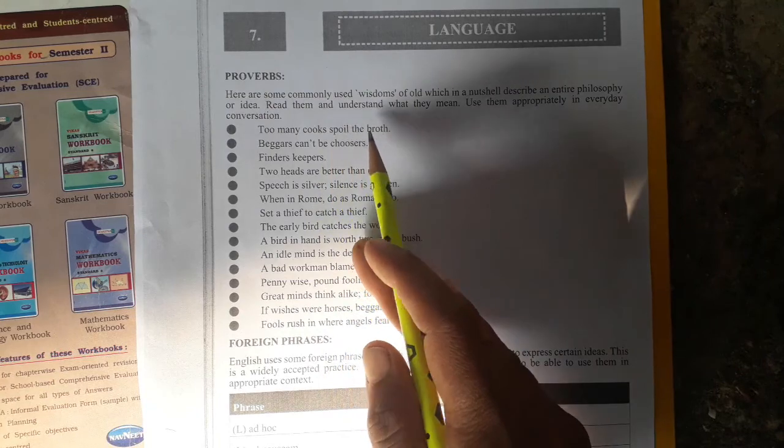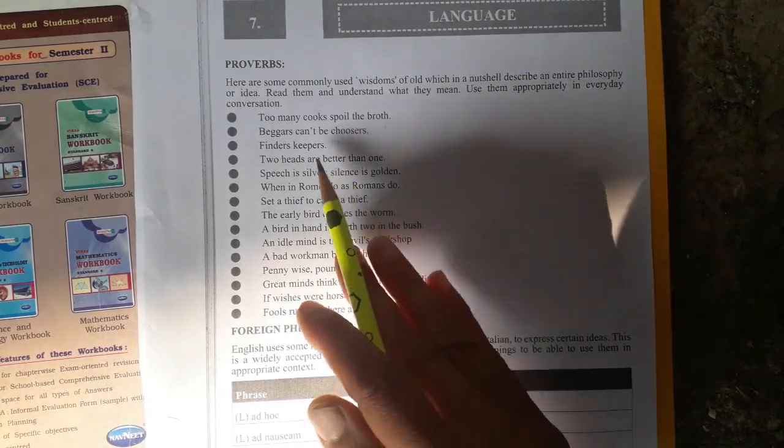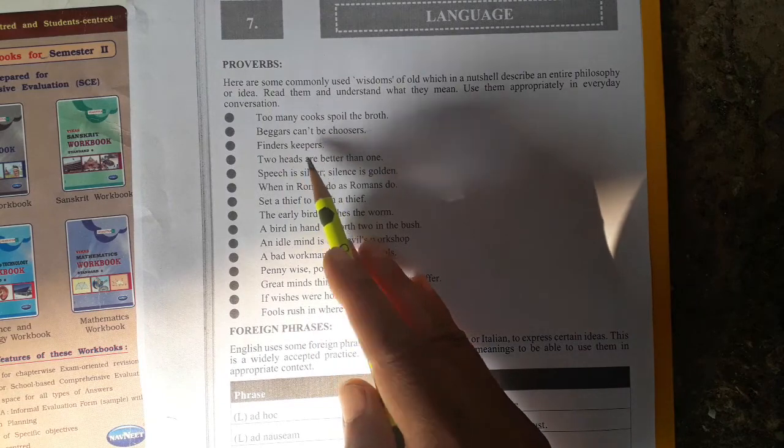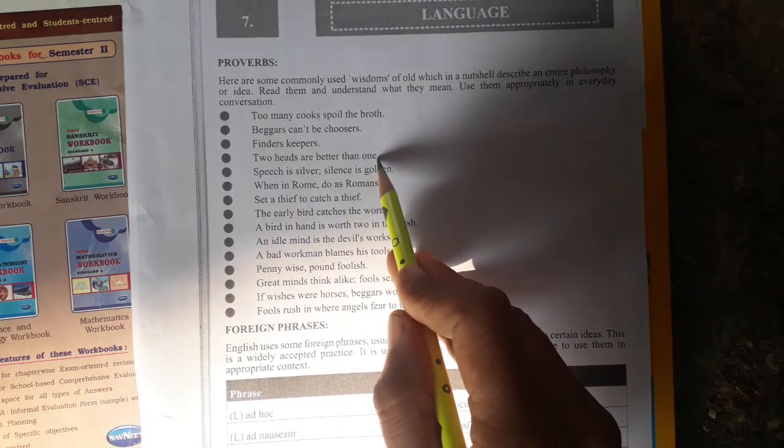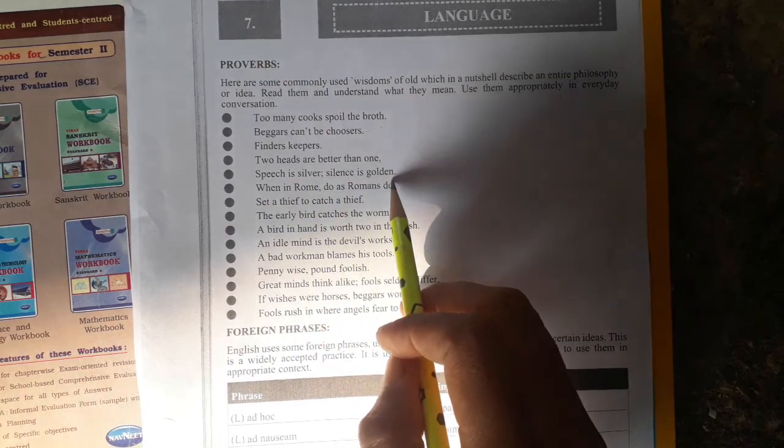Too many cooks spoil the broth. Beggars can't be choosers. Finders keepers. Two heads are better than one. Speech is silver, silence is golden.